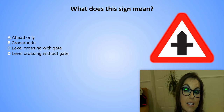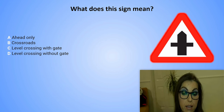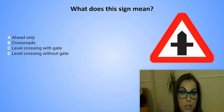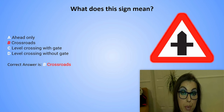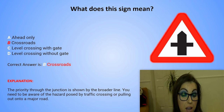What does this sign mean? A. Ahead only. B. Crossroads. C. Level crossing with gate. D. Level crossing without gate. The correct answer is B. Crossroads. Explanation: The priority through the junction is shown by the broader line. You need to be aware of the hazard posed by traffic crossing or pulling out onto a major road.